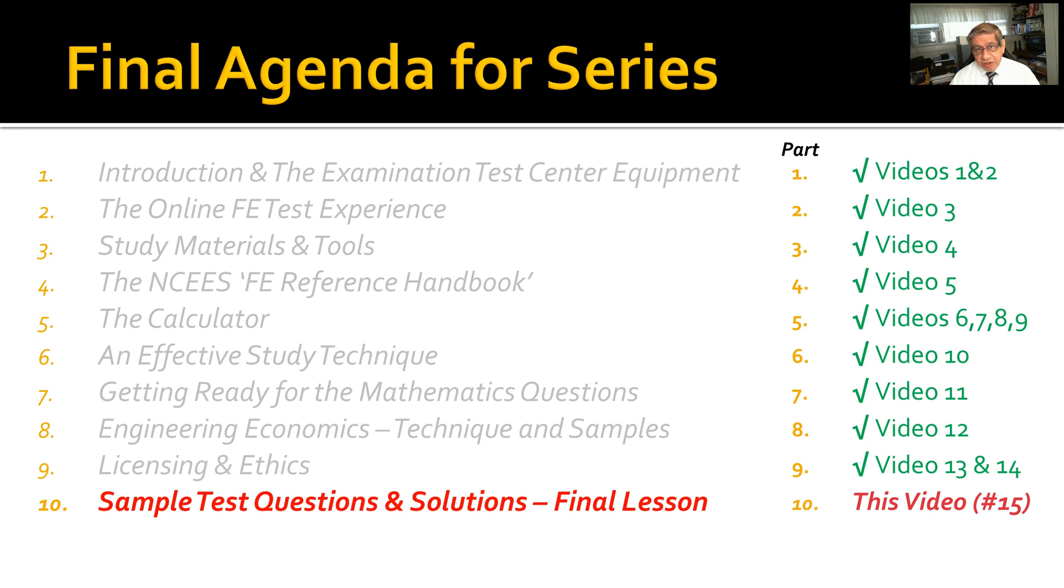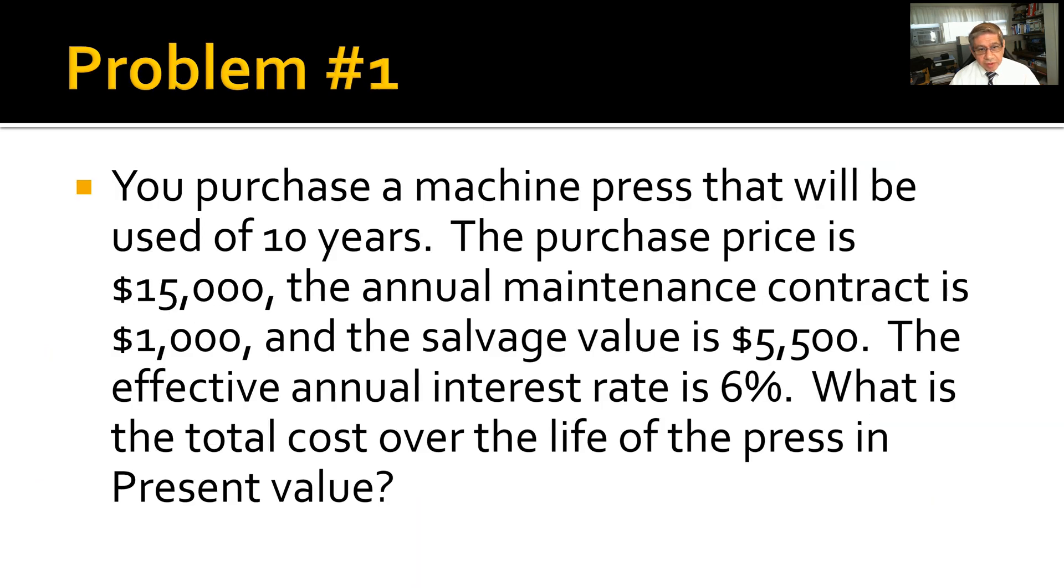Problem number one: You purchase a machine press that will be used for 10 years. The purchase price is $15,000, the annual maintenance contract is $1,000, and the salvage value at the end of that period is $5,500. The effective annual interest rate happens to be 6%. What is the total cost over the life of the press in present value?